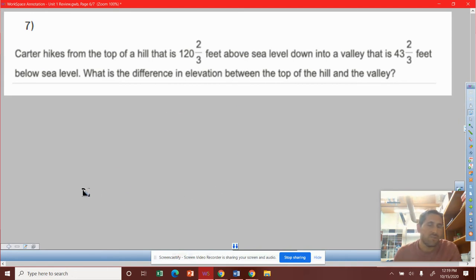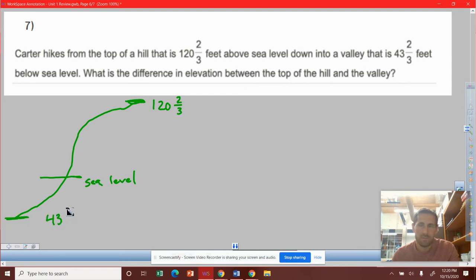It doesn't ask you to do a model, but I'm just going to do one just because. I'm indicating this as sea level. Carter hikes from the top, so this is the top, 120 and two-thirds feet above sea level into a valley that is 43 and two-thirds feet. Sea level is our representation of zero.